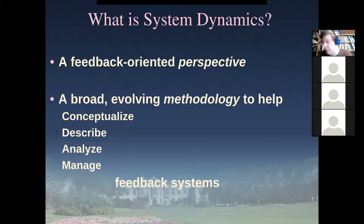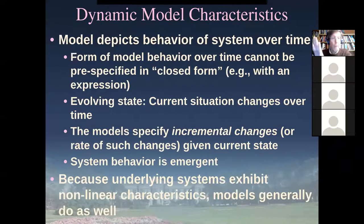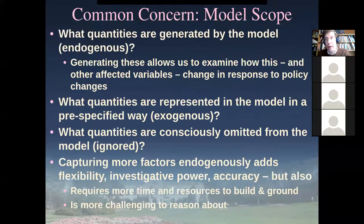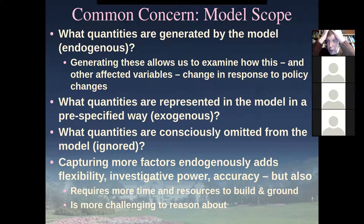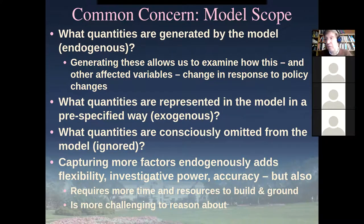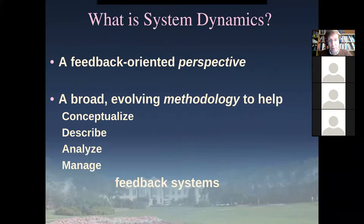A student asked about the scope categories. I should clarify: these are not model categories — they are categories within a given model. When we think about a model's scope, we divide the things with respect to that model into these three categories. We consciously think: what is the model going to produce? What am I going to pre-specify? And what is ignored? Every model will have these three categories of things with respect to it.